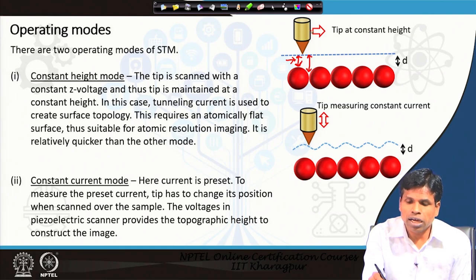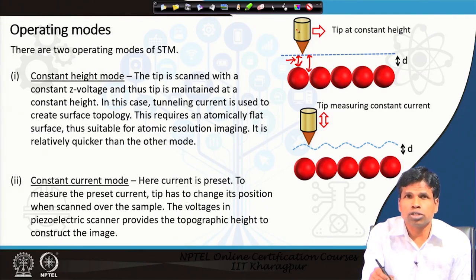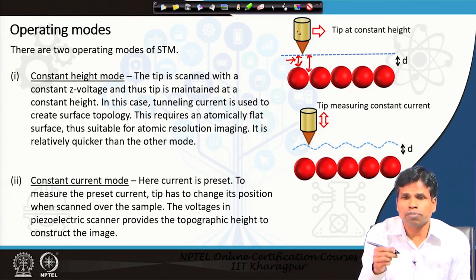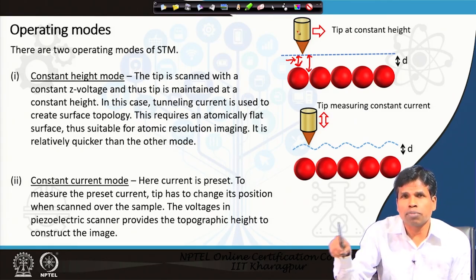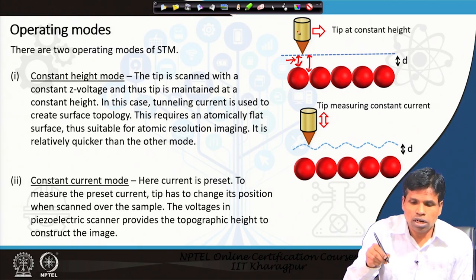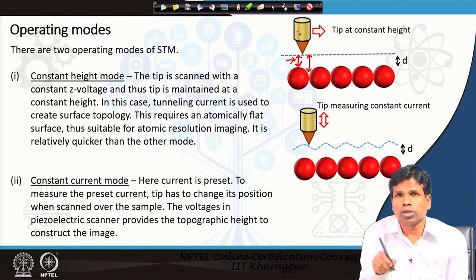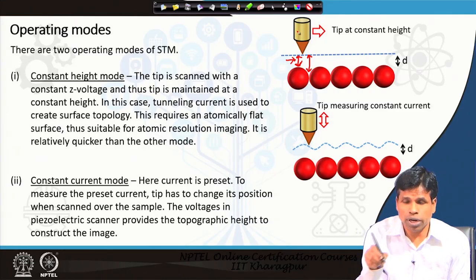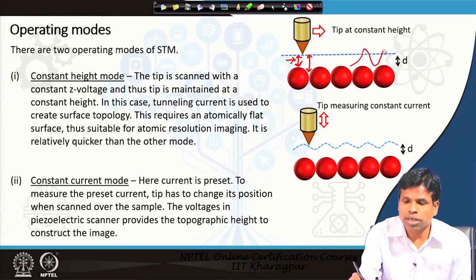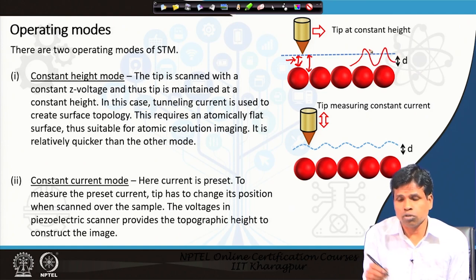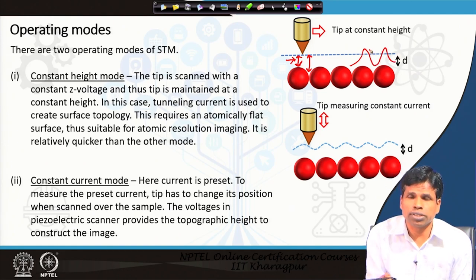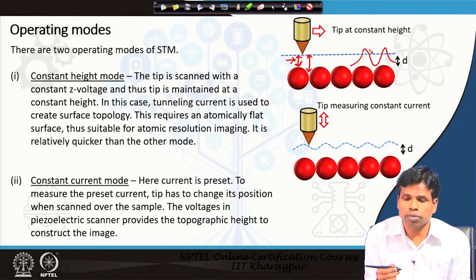Moreover, this is a faster way of scanning because we do not change the voltage to the piezo scanner, so the tip can move at a faster rate. The advantage is that we can scan very quickly. However, the disadvantage is that if the sample is very rough, the tip may crash. Once the tip crashes, artifacts will be generated, the tip shape will be distorted, and artifacts will form.